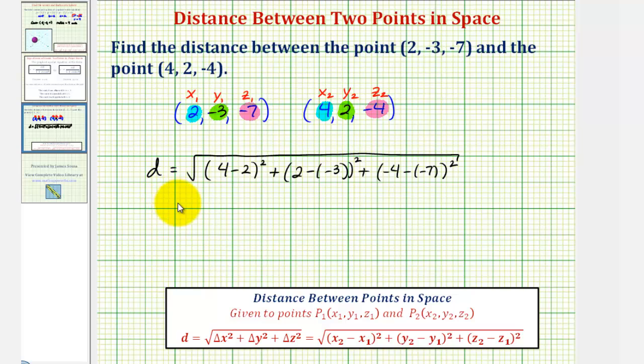And now we'll simplify. So we have the square root of (2)² plus (2 - (-3)) becomes (2 + 3), so we have (5)², plus (-4 - (-7)) becomes (-4 + 7), that would be (3)².